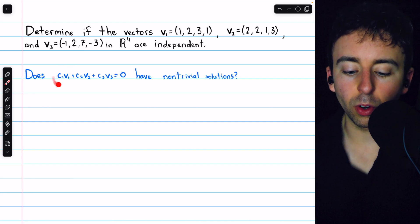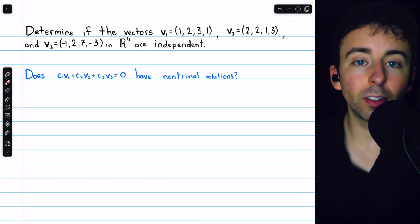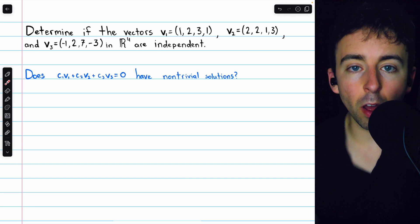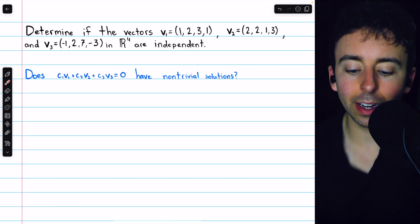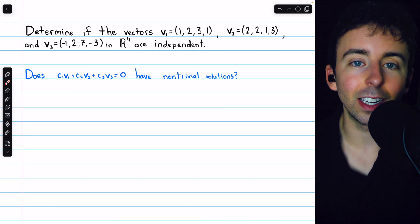On the left side of this equation is just a linear combination of those three vectors, and the right side is zero. So the idea is that if there's some non-trivial way to combine the vectors so that they cancel out, then they are not linearly independent. If there is no way to do this, then they are linearly independent.